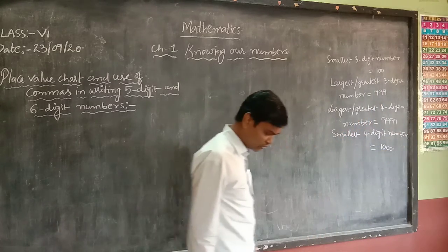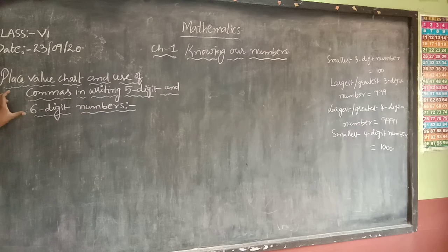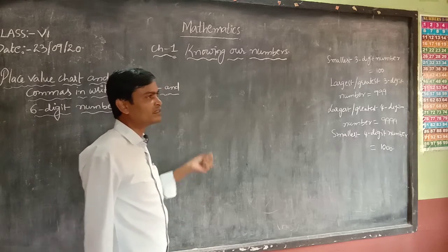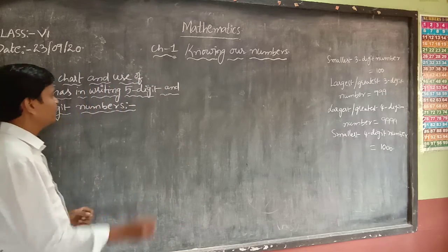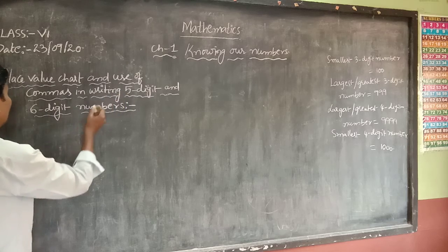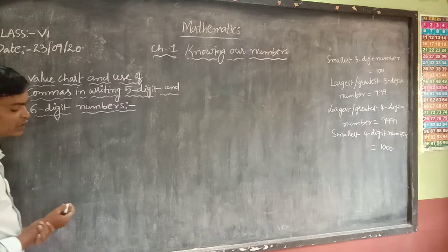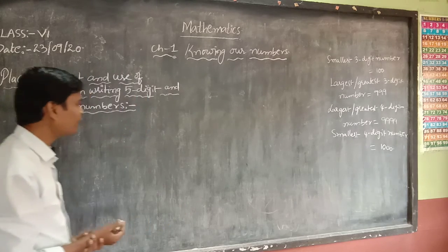Now we will learn how to write a five-digit and six-digit number. Before going there, we need to learn how to place commas in between. For that, we should know the place value chart.